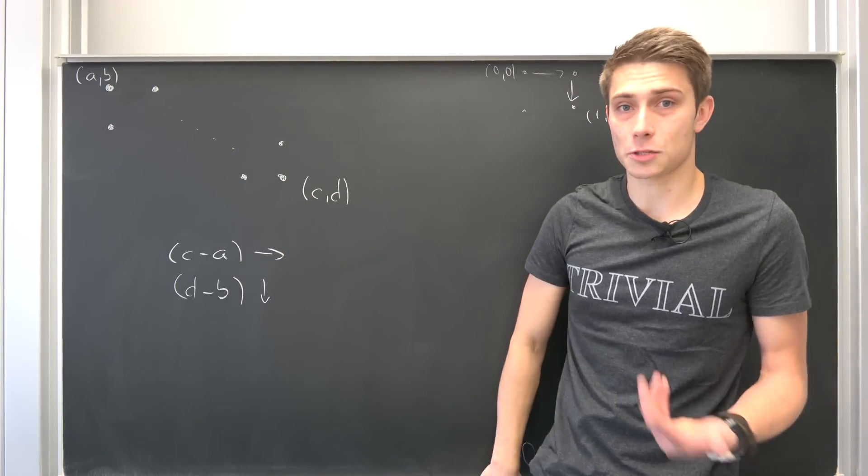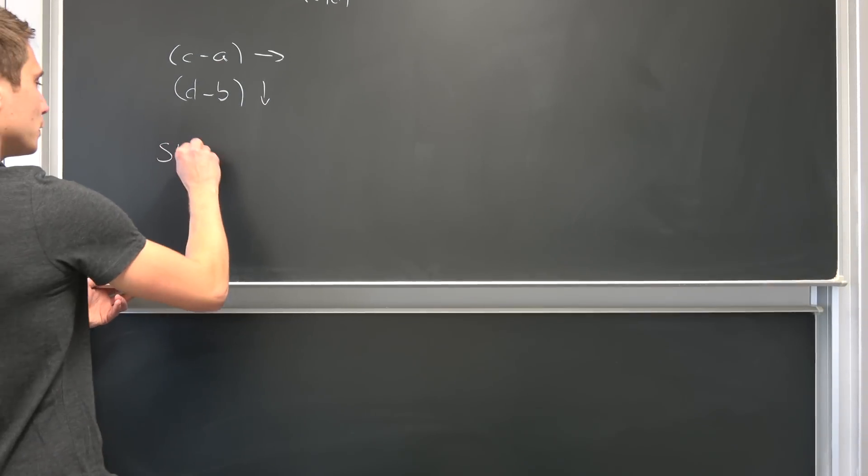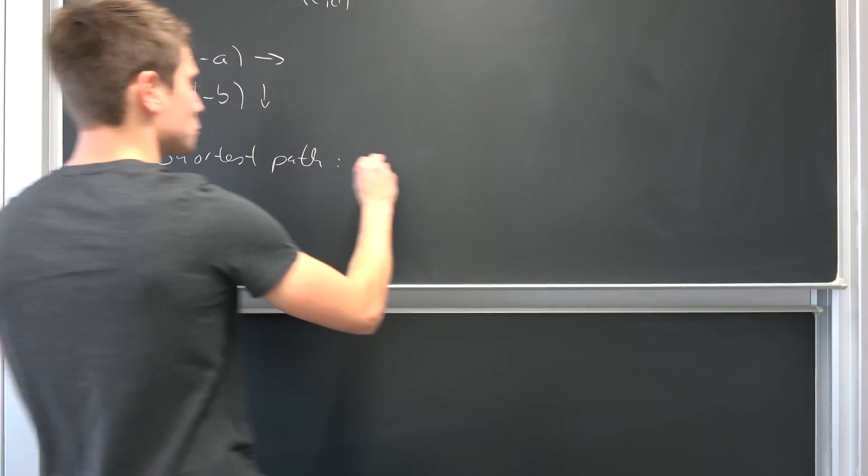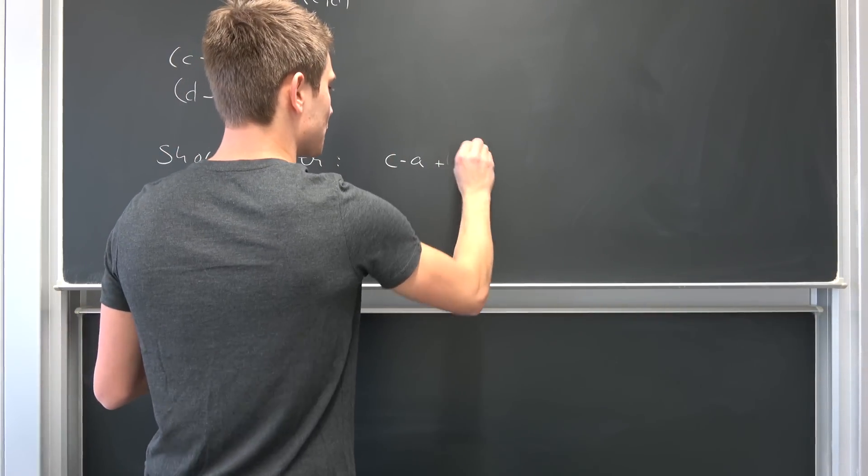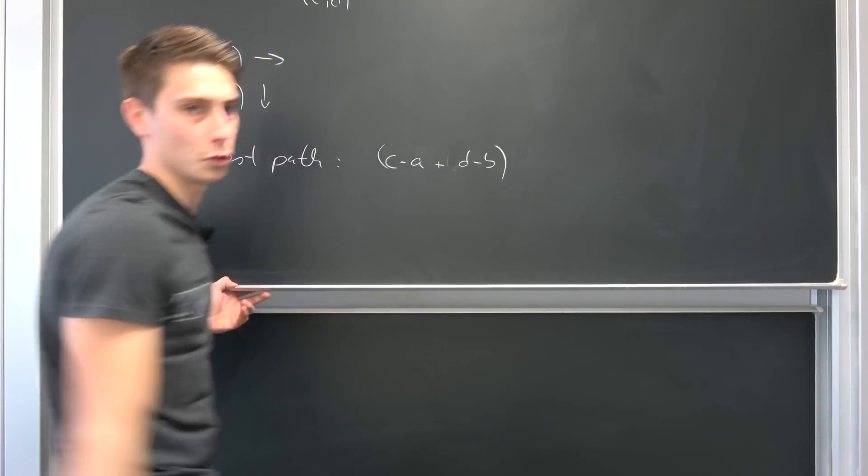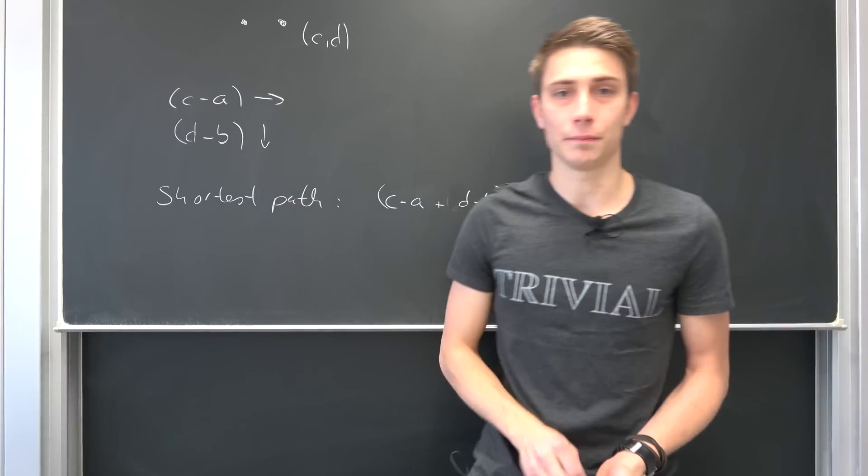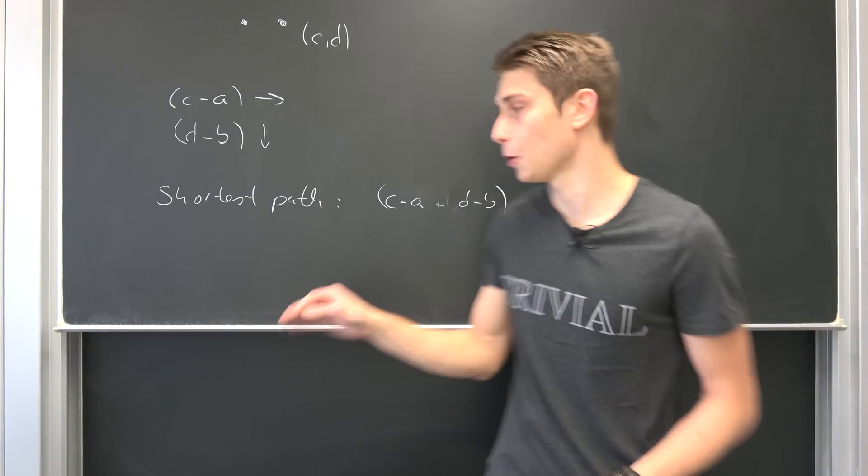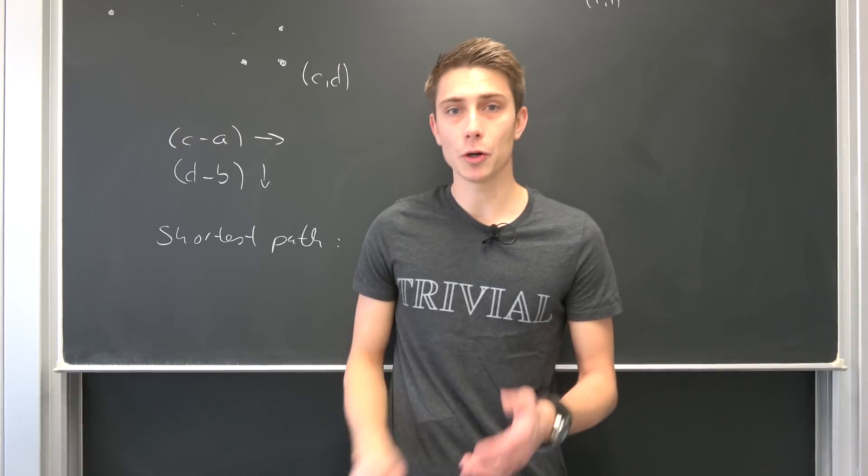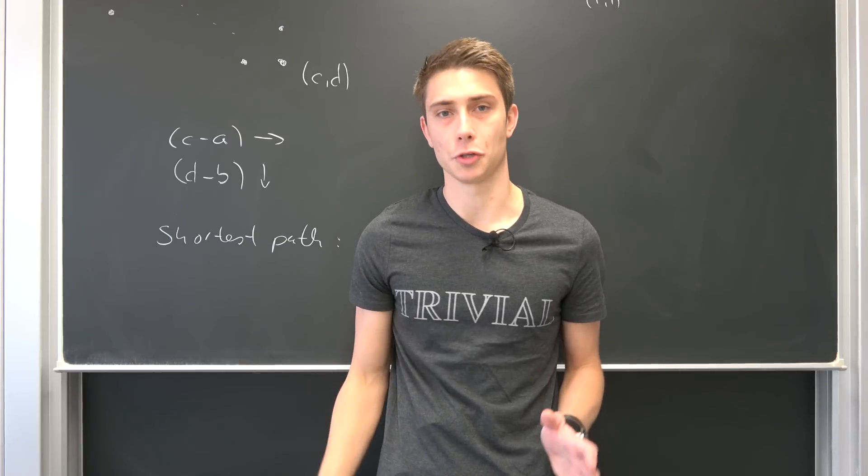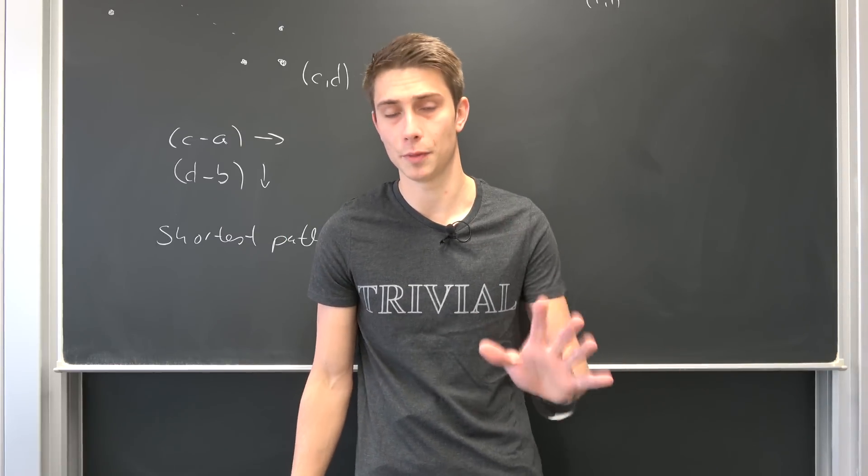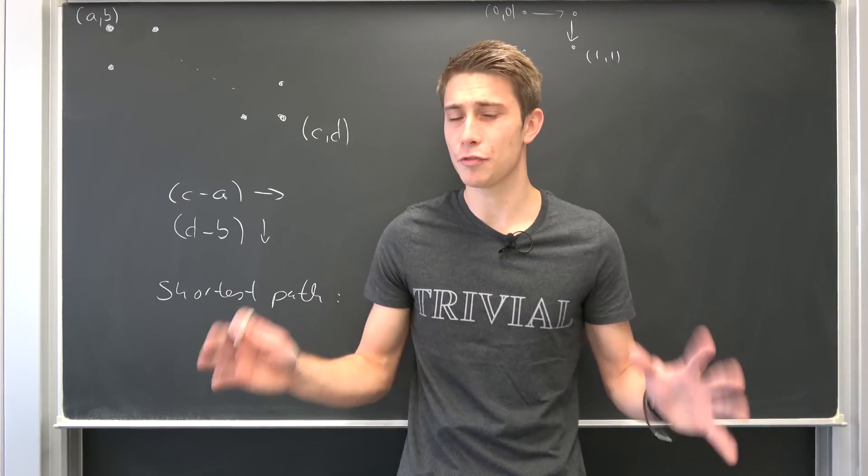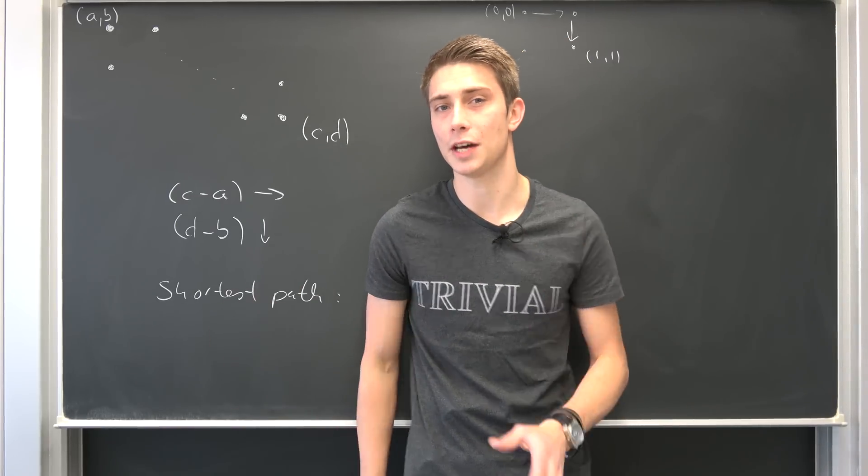Yeah, it does work out. So a shortest path corresponds to c minus a plus d minus b arrows. We have found the amount of arrows which lie in between those points corresponding to shortest path. But we wanted to find out the total amount of shortest paths, meaning here comes the combinatorics in.